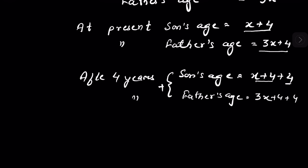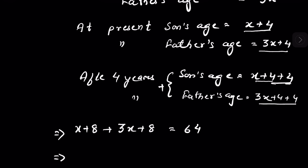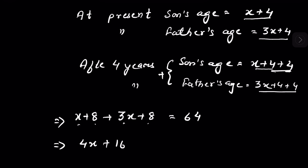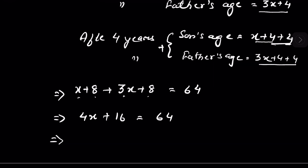The question says that after four years, son's age plus father's age equals 64 years. So: x plus eight plus three x plus eight equals 64. Now x plus three x is four x, and eight plus eight is 16, so four x plus 16 equals 64.